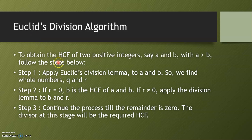Euclid's division algorithm is a technique to find the HCF of 2 positive integers. We have seen this in the previous presentation — if you have the highest common factor, then you can use Euclid's division algorithm easily.